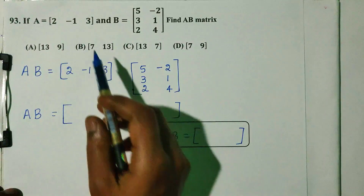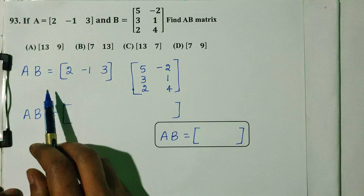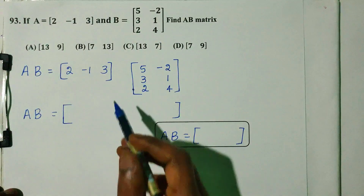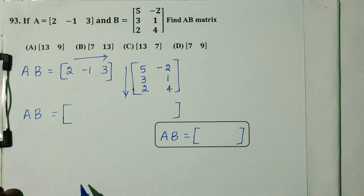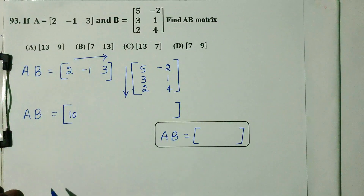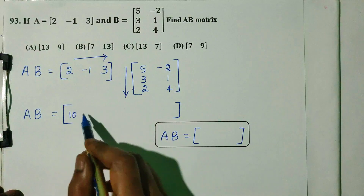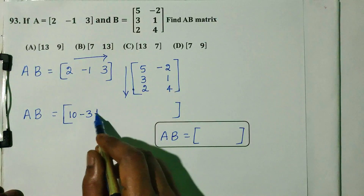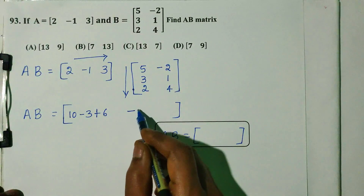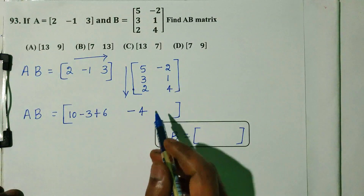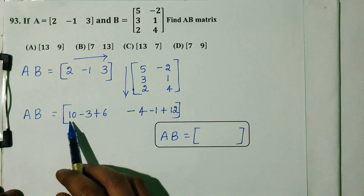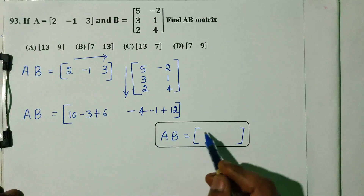For A×B multiplication, rows into column: first row first column: 2×5 = 10, (-1)×3 = -3, 3×2 = 6, total = 13. First row second column: 2×(-2) = -4, (-1)×(-1) = 1, 3×4 = 12, total = 9. Second row first column: (-1)×3 = -3 and further multiplication gives -3. Second row second column calculation gives result.